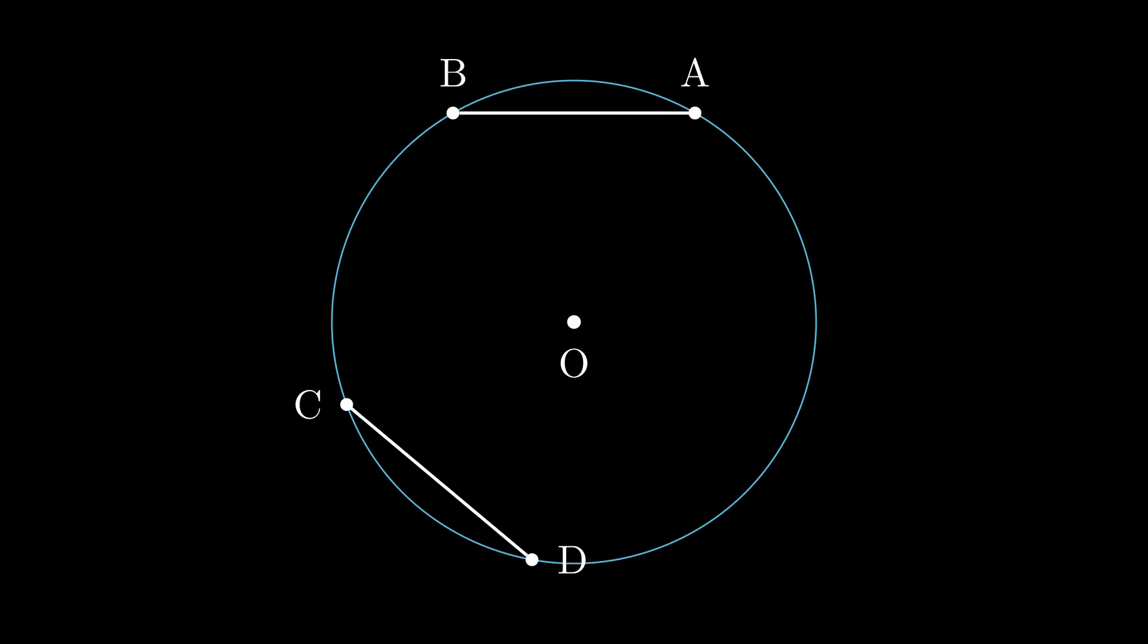Remember, we do not have any information available for the lengths of these two chords. But let's say it is given to us that the angles subtended by the chords AB and CD at center O are equal, which you can see in the yellow markings.